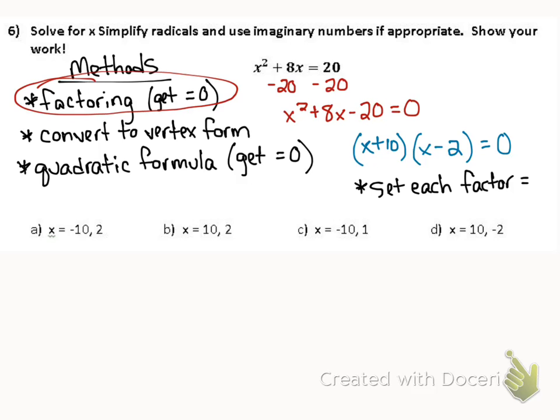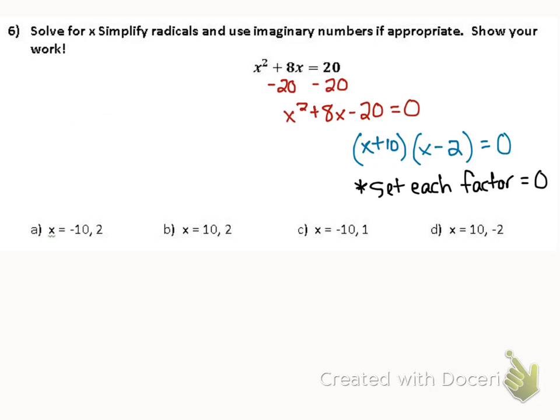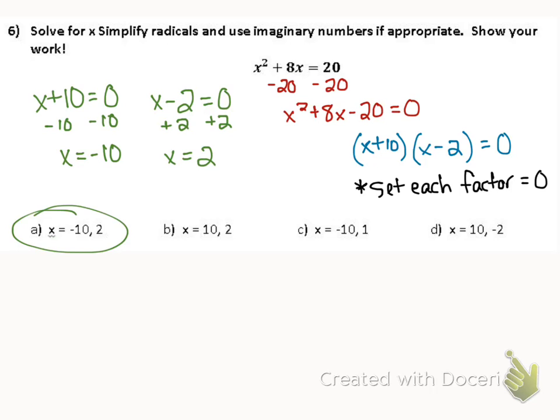Now that I've got this written in factored form, I can set each factor equal to 0. For the first factor, I'll subtract 10 from both sides, which gives me x = -10. For the second factor, I'll add 2 to both sides, which gives me x = 2. So the correct answer to this equation is letter A.